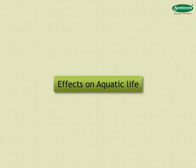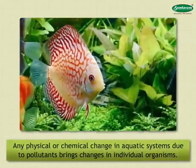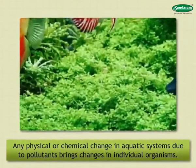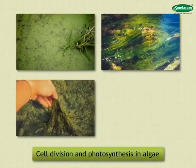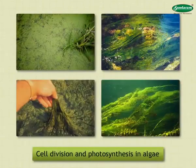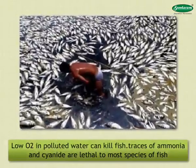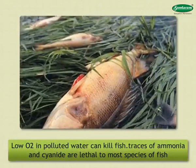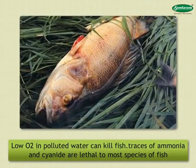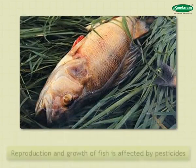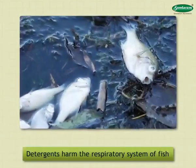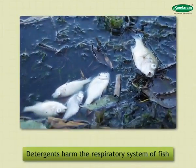Effects on Aquatic Life: Any physical or chemical change in aquatic systems due to pollutants brings changes in individual organisms. Due to oil pollution, cell division and photosynthesis in algae gets affected. Low oxygen in polluted water can kill fish. Even traces of ammonia and cyanide are lethal to most species of fish. Reproduction and growth of fish is affected by pesticides. Detergents harm the respiratory system of fish.